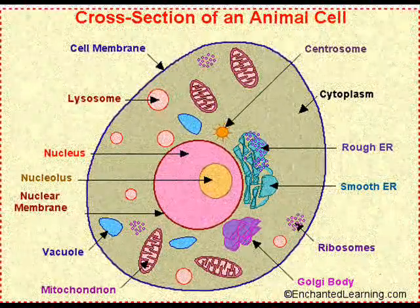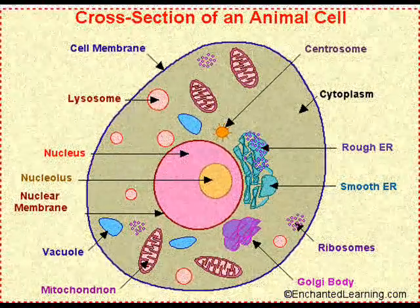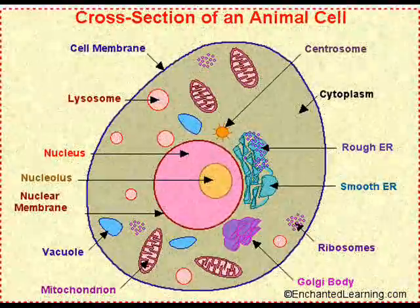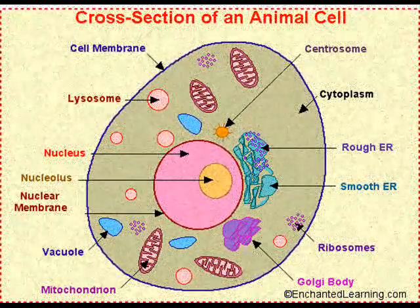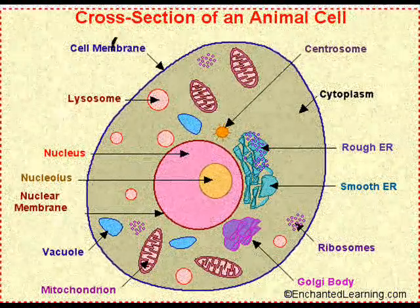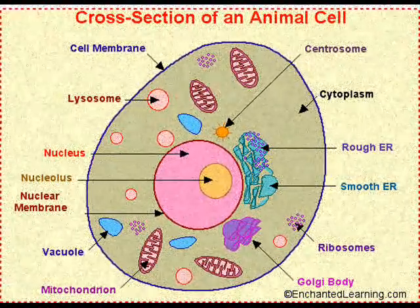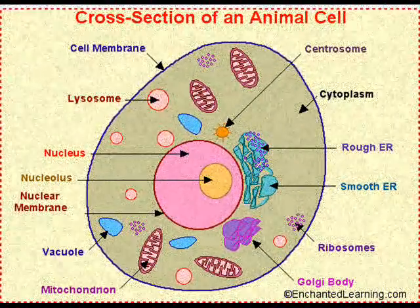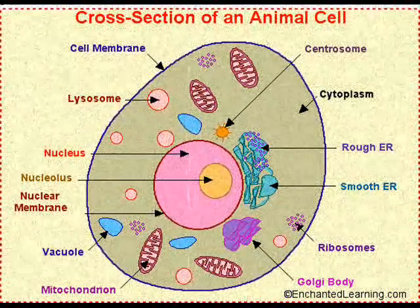The nucleus, sort of like the manager and owner, is the brain of the whole cell. It makes sure everything is running smoothly and that the cell is in tip-top shape. The nucleus gives orders to all other parts of the operation in a very bossy, big-ego manner.